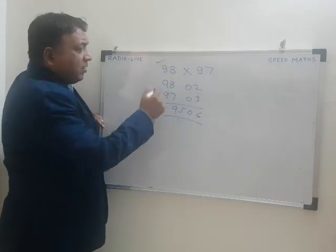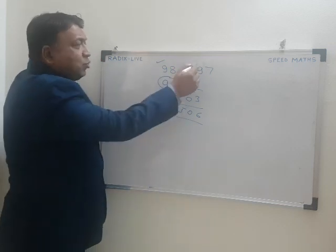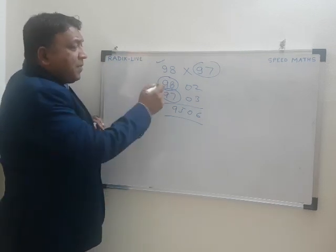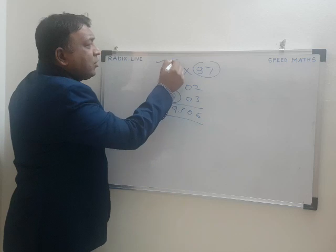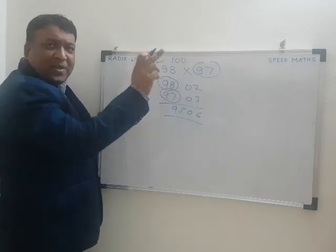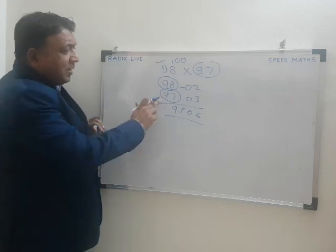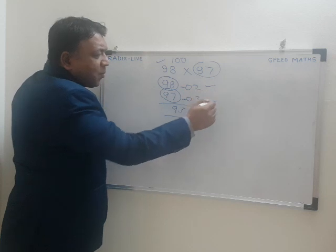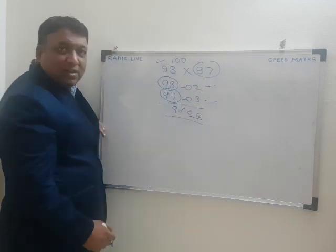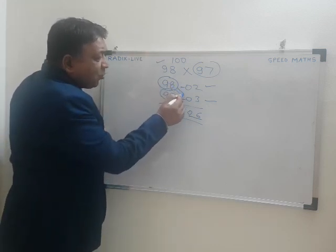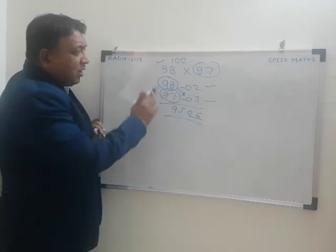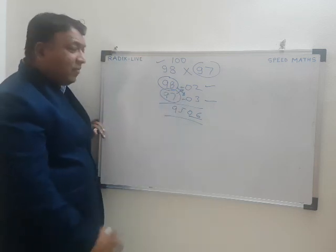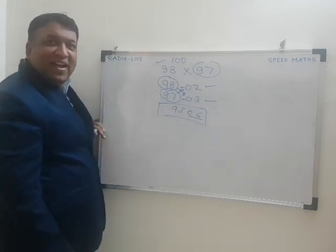My number is 98. The second number is 97. I will multiply both numbers. The base number here is 100. So: 98 minus 100 gives minus 2; 97 minus 100 gives minus 3. Now, 2 into 3 equals 6. For the left part: 98 minus 3 equals 95, or equivalently, 97 minus 2 also equals 95. So the answer is 9506. It's that easy.